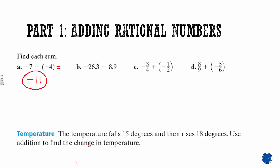Next: negative 26.3 plus 8.9. Only one of them is negative, so you find the bigger number — that's 26.3. Since its sign is negative, we know the answer is going to be negative. We take the difference: 26.3 minus 8.9. We turn the tenths digit into a 5 and carry, so 13 minus 9 gives 4, and 25 minus 8 gives 17. We pull the decimal down — the answer is negative 17.4.